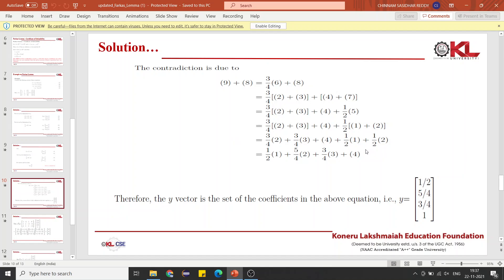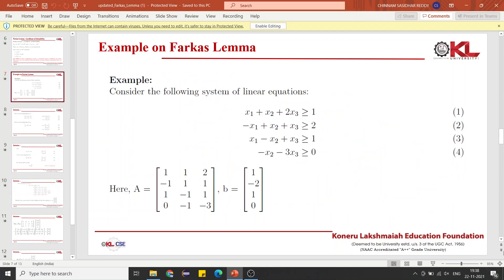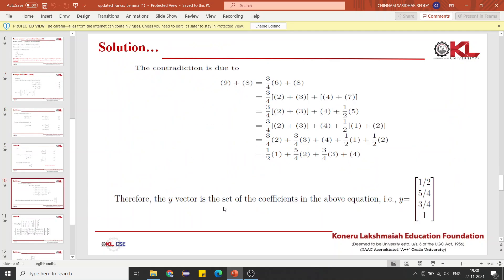Simply, we can say that multiplying these equations with these numbers and adding them eliminates all of the coefficients. From these coefficients, we will write column matrix Y. Y equals 1/2, 5/4, 3/4, and 1. This is our column matrix Y. Now we have A, B which we wrote initially, and we have Y matrix also.